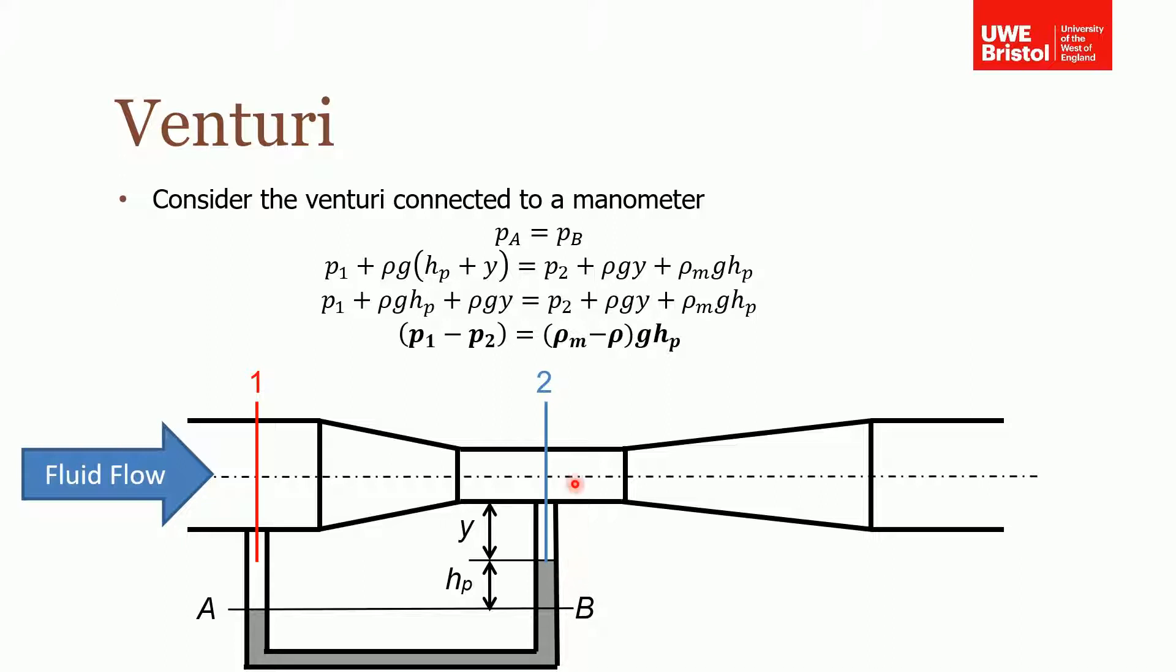And we have a manometer fluid in there. And if you remember from when we're doing the hydrostatics, the pressure at A has got to be the same as pressure at B. Otherwise this level is going to change. So pressure A is equal to the pressure B. Now the pressure A is equal to the static pressure at one, and that's this term here, plus the hydrostatic pressure of the fluid acting on A. So in this instance it's ρg of the fluid, so ρ is the density of the fluid that's in the pipe plus this distance and this distance. That gives us pressure A.